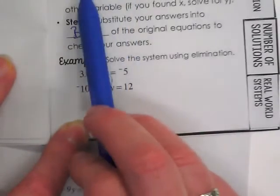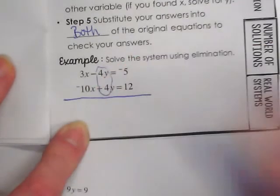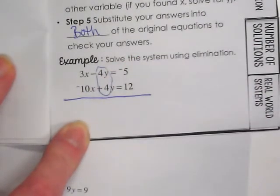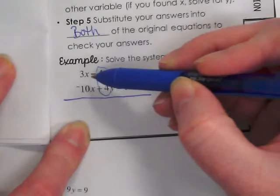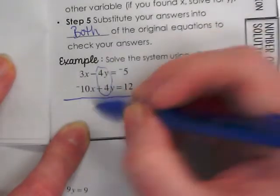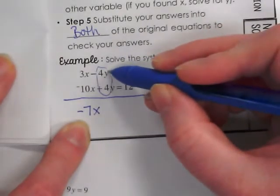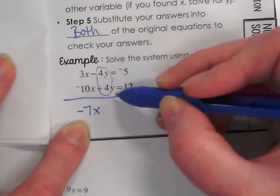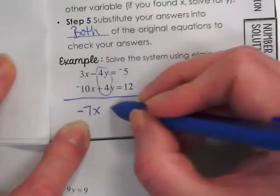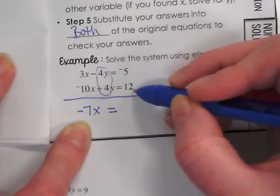So I'm on to step three. Add or subtract the equations to solve for either the x or the y. So we're going to take these two equations and we're going to combine like terms from the equations themselves. So 3x minus 10x gives us negative 7x. Negative 4y plus 4y eliminated. That's a zero.